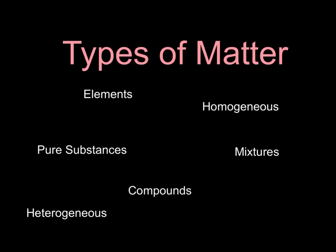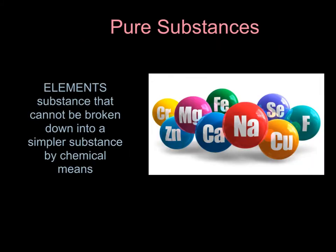There are two main types of matter: pure substances and mixtures. Let's take a closer look at each. In general, a pure substance is just a single type of material. It's unblemished, it's pure — it doesn't contain any contamination.